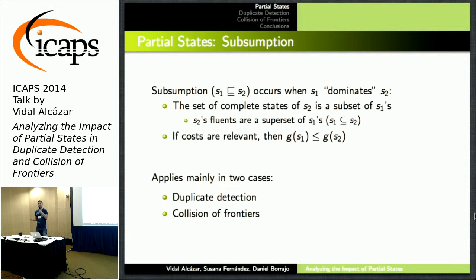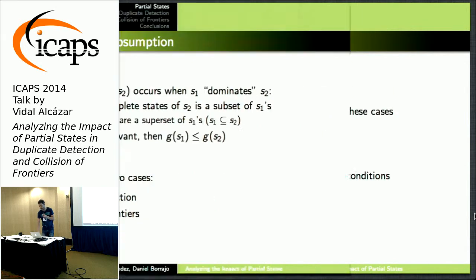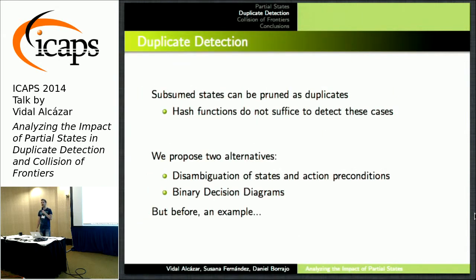If you think about this in regression, it's actually trying to achieve fewer goals, which is going to be better. In the cases mentioned in the title, I'm going to go first over duplicate detection in regression. Most people use a hash table implementation to detect duplicates; however, in formalized partial states, some states are not defined the same way, so a hash function won't give you the same value and will be unable to detect these cases.